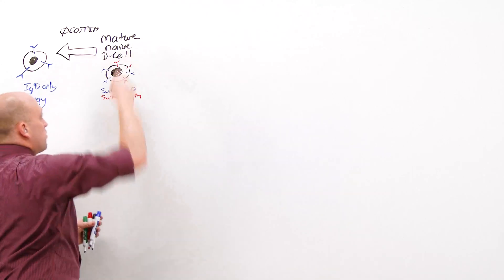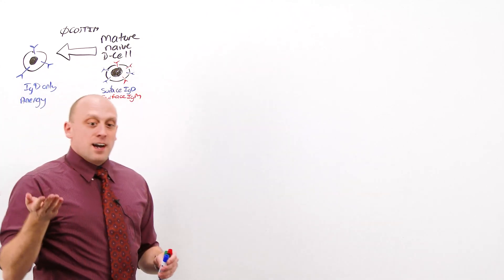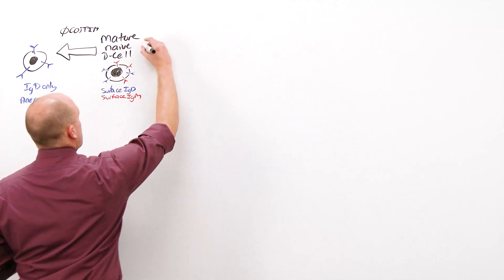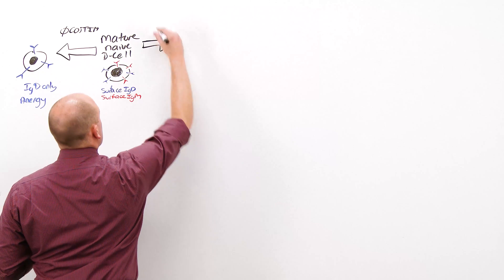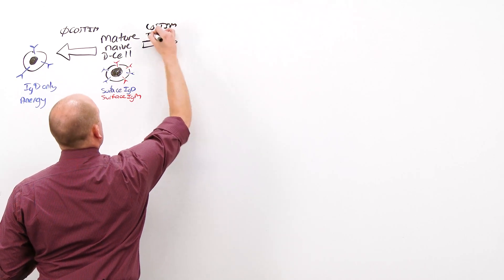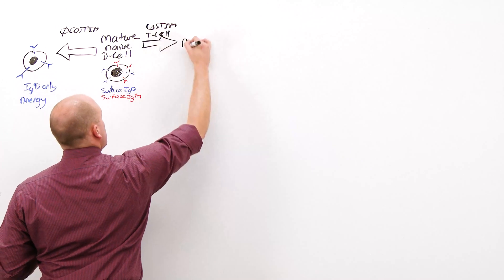If this mature naive B-cell says, hey, I have this antigen, I think it's bad, and the T-cell agrees, that is there is a co-stimulatory signal from the T-cell, this will lead to activation.